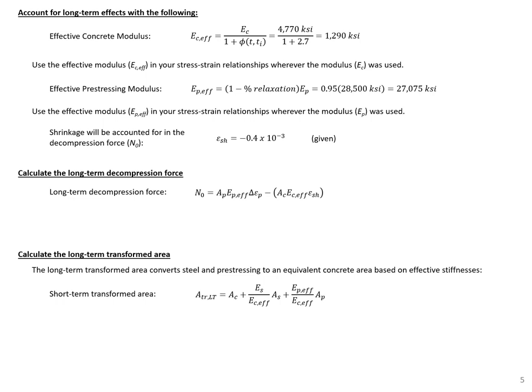Next, we calculate the long-term effects of the 225-kip and negative 1,000-kip axial loads, assuming those loads are sustained over time. We use our effective concrete modulus to account for creep: the effective concrete modulus equals our modulus divided by (1 plus the creep coefficient). For pre-stressing, with 5% relaxation, the effective modulus equals (1 minus 5%) times the pre-stressing stiffness. We also account for shrinkage in our decompression force using the given shrinkage strain.